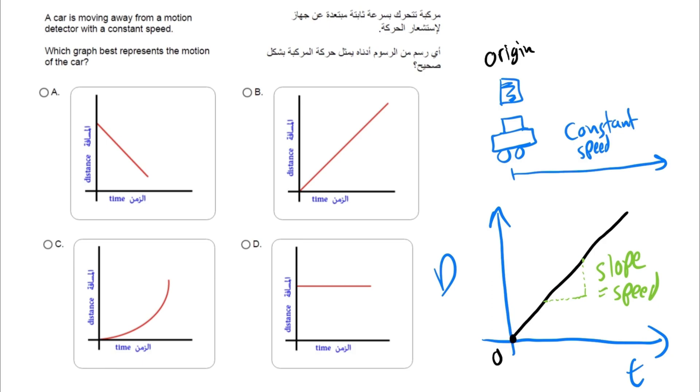Now let's evaluate the options that we have. Option A or letter A is not going to be the correct answer because we are not starting from the origin. We are starting from somewhere above the origin, which is not the case.